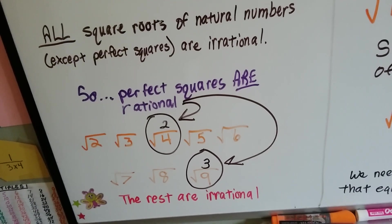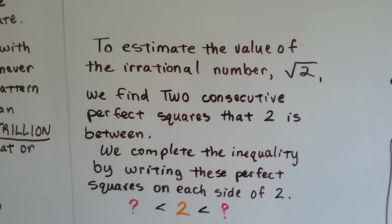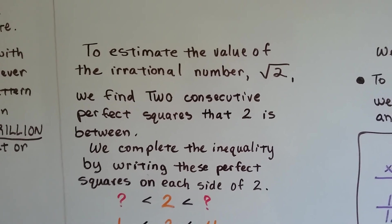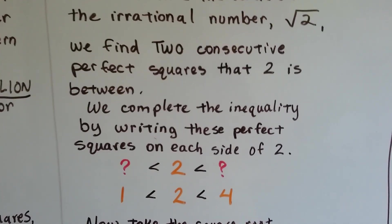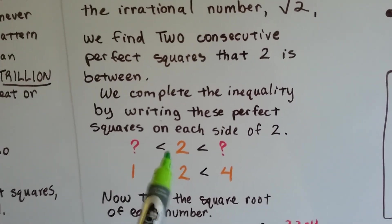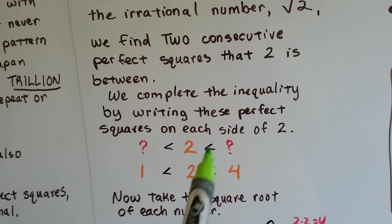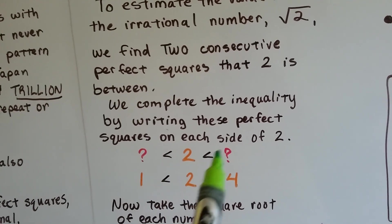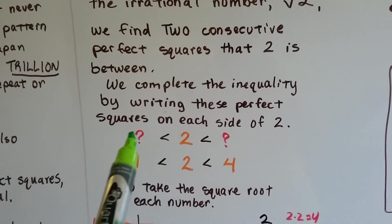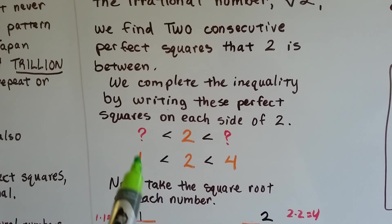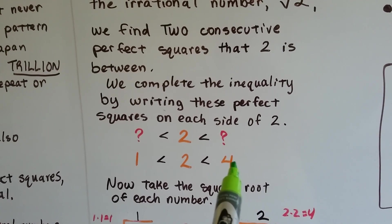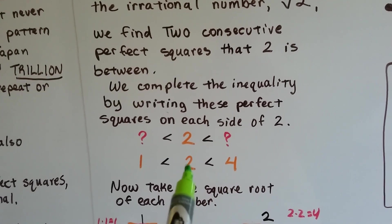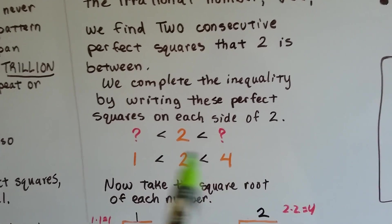So to estimate the value of the irrational number square root of 2, we find two consecutive perfect squares that 2 is in between. We complete the inequality by writing these perfect squares on each side of 2. We know 2 is going to be in between two other numbers. The square root of 1 is 1 because 1 times 1 is 1, and the square root of 4 is 2 because 2 times 2 is 4.